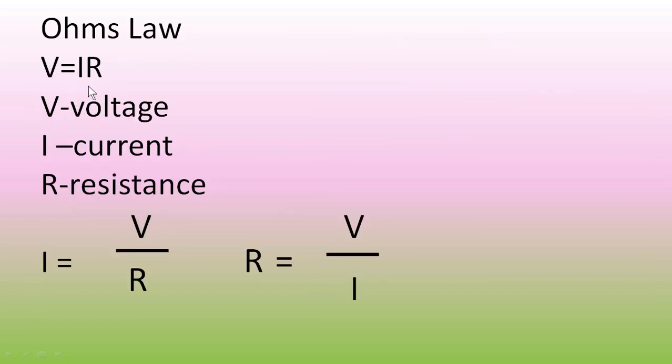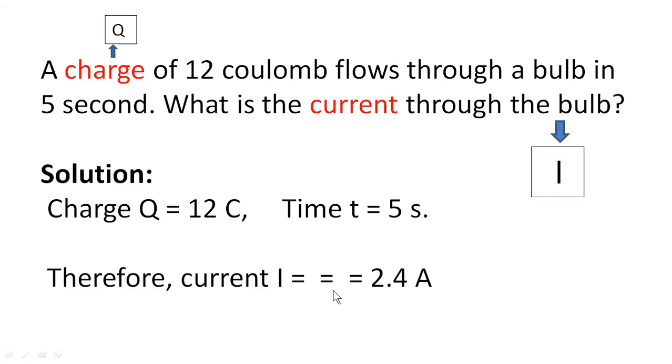Now let us enter into the lesson. Also, we know Ohm's law: V is equal to I into R. V is the voltage, I is current, and R is resistance. Suppose if you want the relation for I, then I is equal to V by R. You have to change this relation as I equals V by R. And if you want the resistance R, then you have to interchange the relation as V by I. Now let us enter into the problem.